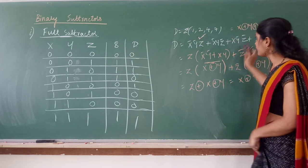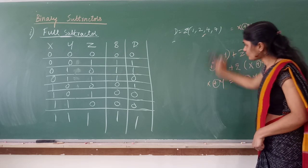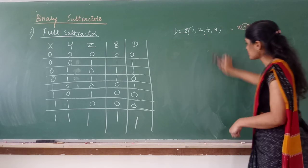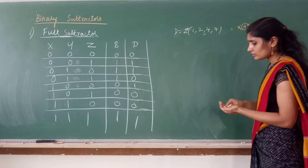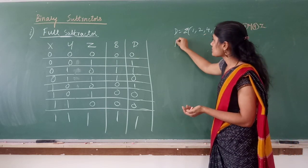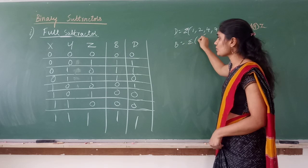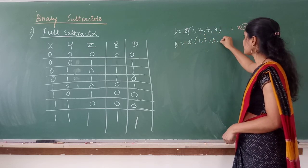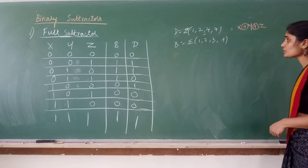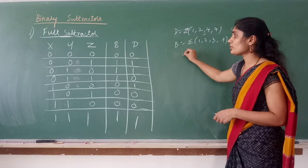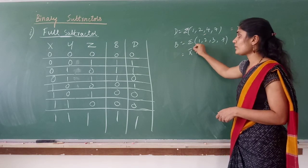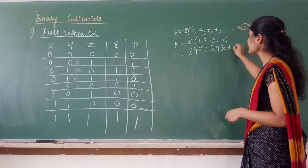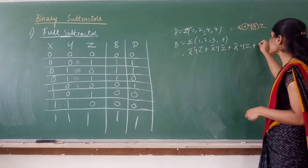For borrow, the equation is the sum of minterms 1, 2, 3, 7. Writing it out: x-bar·y-bar·z + x-bar·y·z-bar + x-bar·y·z + x·y·z. Taking x-bar·y common from the last two terms of the x-bar group gives x-bar·y(z-bar + z) = x-bar·y.